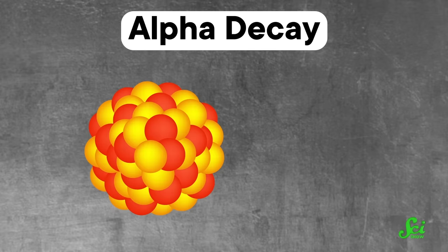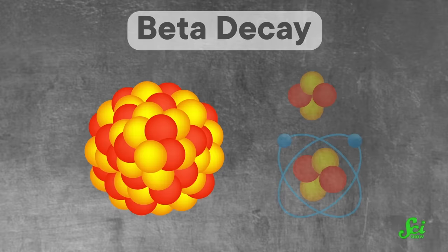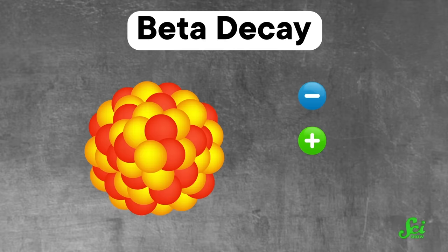The two types of radioactive decay we're going to focus on today are called alpha and beta. Alpha decay is when a nucleus emits an alpha particle, which is made of two protons and two neutrons — basically the same thing as a helium-4 nucleus. During beta decay, the unstable isotope emits a beta particle, which is either an electron or a positron depending on the exact kind of beta decay you're dealing with.